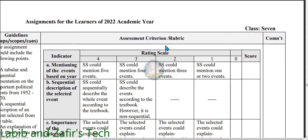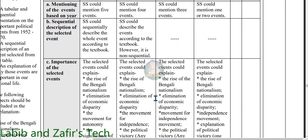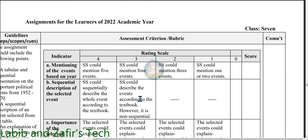Now we will go through the assignment rubrics. For indicator A — mentioning events based on years — for four marks, if 5 events are mentioned. For three marks, 4 events. For two marks, 3 events. For one mark, 1 or 2 events. For question B — sequential description of the selected event — this is also a four marks question. For four marks, students could sequentially describe the whole event according to the textbook. For three marks, students could describe the events according to the textbook but non-sequentially. There is no two or one marking; this is a four, three, or zero marking.